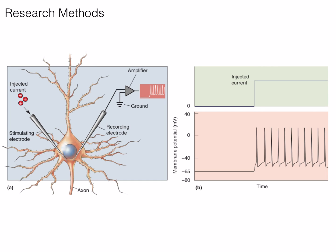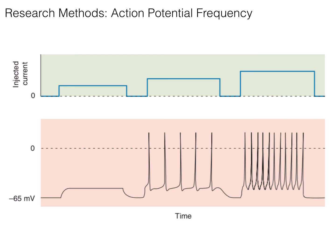Researchers have developed methods to inject current into the neuron and induce action potentials. One such method, the patch clamp, involves sealing the tip of an electrode to a very small patch of membrane. Current can then be passed through the electrode to induce membrane depolarization. The frequency of an action potential is directly dependent on the amount of current injected. As you can see, each time the current is stepped up, the frequency of the action potential increases.